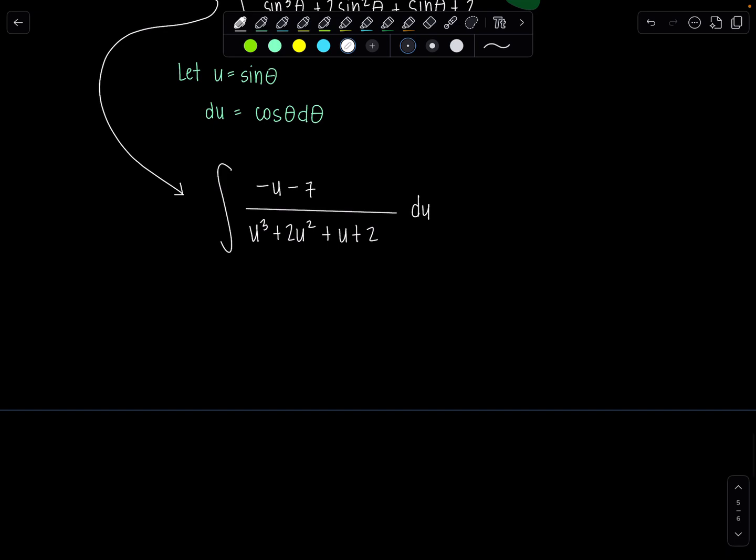All right now it's partial fraction time. For me it is. If you want to do something else have at it. We have negative u minus 7 in the numerator and then we need to factor the denominator. There's four terms but have no fear. We can factor by grouping.